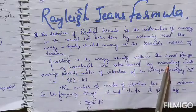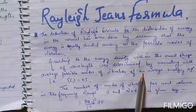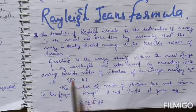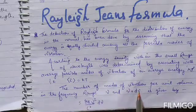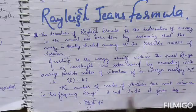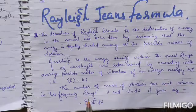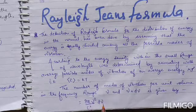The average energy here is kT according to the number of modes of vibration. According to our frequency range ν and dν, the number of modes of vibration per unit volume is given by 8πν²/c³ dν.